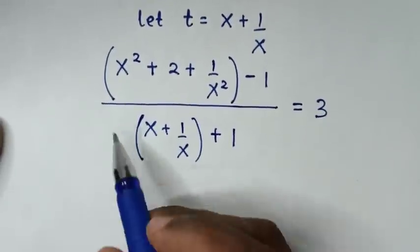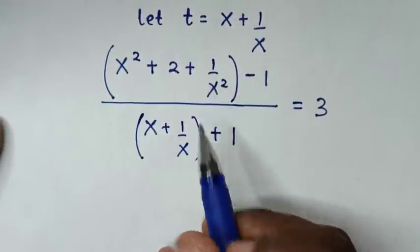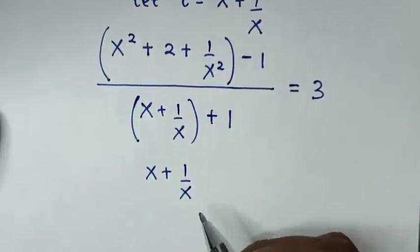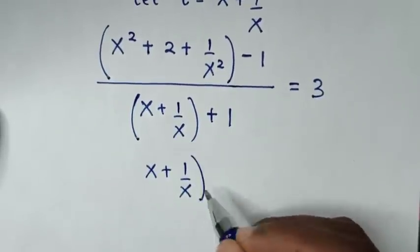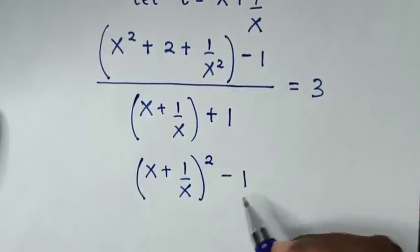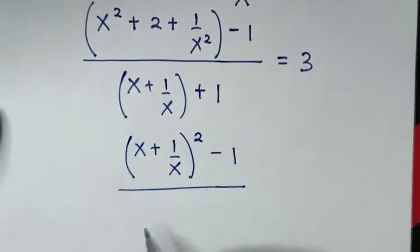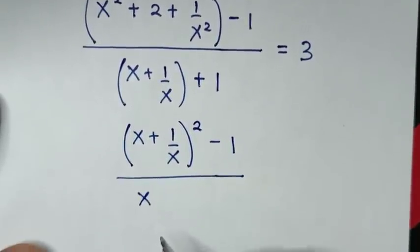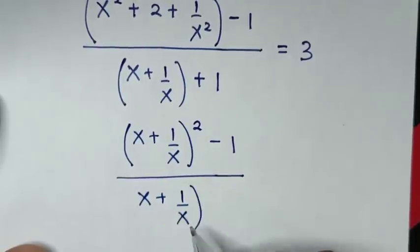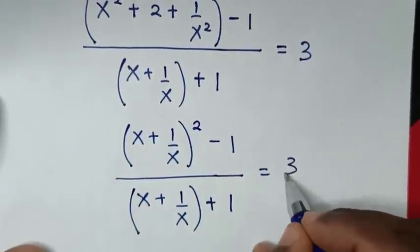The bracket x² plus 2 plus 1/x² is the same as (x plus 1/x)², then minus 1. In the denominator it is (x plus 1/x), plus 1, equal to 3.